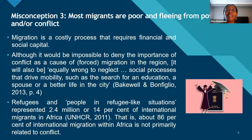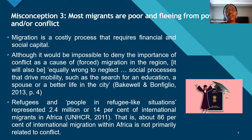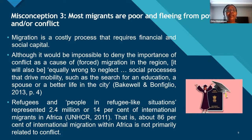The misconception that most migrants are poor and fleeing poverty or conflict is countered by the fact that migration itself is a costly process requiring financial and social capital. You need financial resources to move, and you usually need social networks at your destination — family, friends, or other networks to help you settle. So the very poor are not necessarily the ones who can migrate most of the time. Although conflict is undeniably a cause of forced migration in Africa, it is equally wrong to neglect social processes driving mobility, such as a search for education.